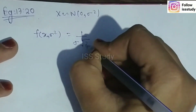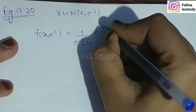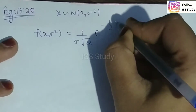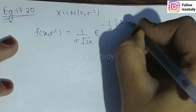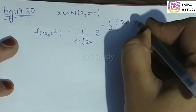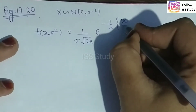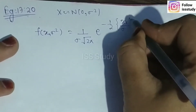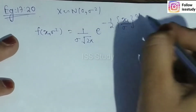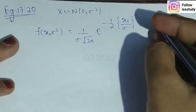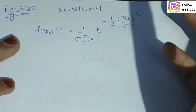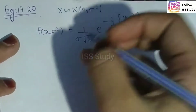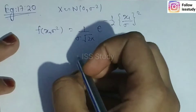The PDF is: f(xi; σ²) = (1 / (σ√(2π))) · exp(−(1/2)(xi/σ)²), where the range of x is minus infinity to plus infinity.